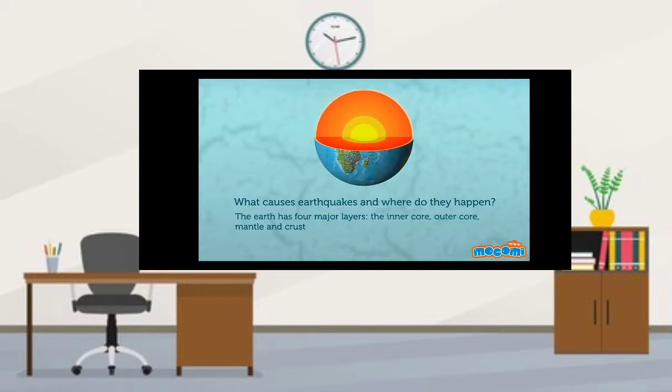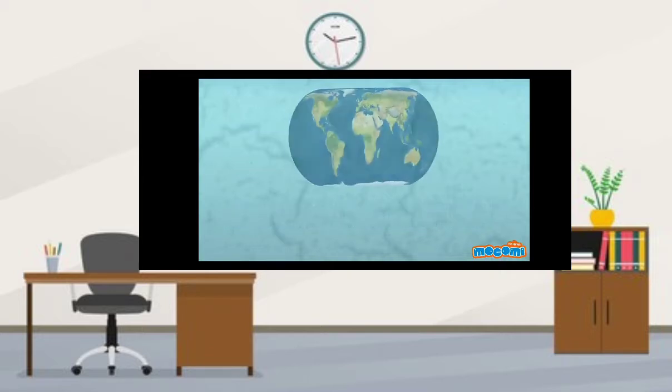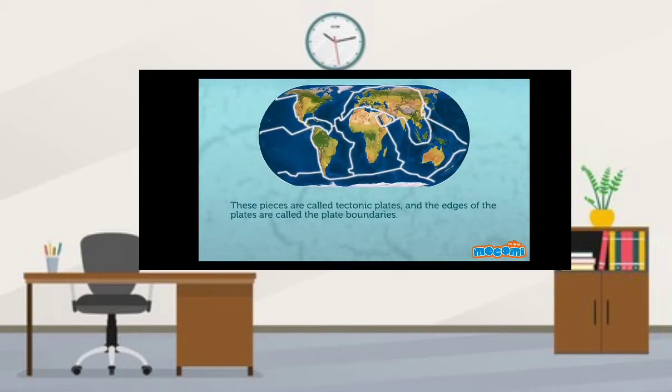The earth has four major layers: the inner core, outer core, mantle, and crust. The crust and the top of the mantle make up a thin skin on the surface of our planet. But this skin is not all in one piece. It is made up of many pieces covering the surface of the earth. These pieces are called tectonic plates, and the edges of the plates are called the plate boundaries.